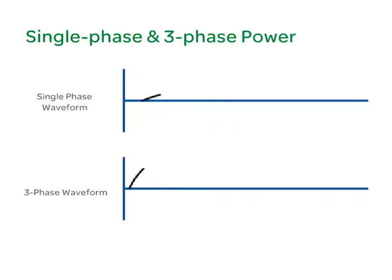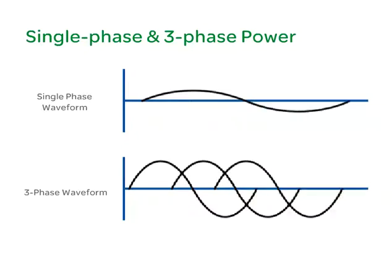Two common forms of AC power provided to data centers are single phase and three phase power. Single phase power has only one basic power waveform, while three phase power has three basic power waveforms that are offset from each other by 120 degrees.